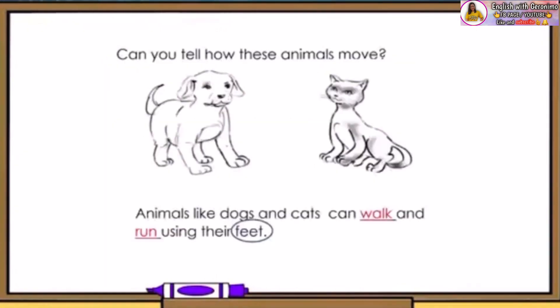Can you tell how these animals move? The dog can walk and run. How about the cat? Cats can walk and run too. And what do they use to walk and run? Their feet and legs. Animals like dogs and cats can walk and run using their feet.